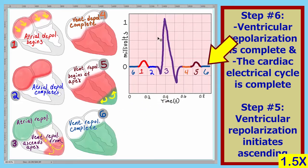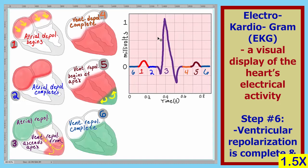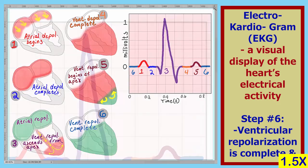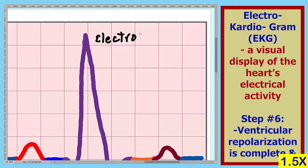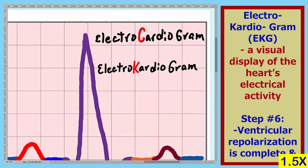Shown on the graph is one complete cycle of the heart's electrical activity. This is an electrocardiogram. The first electrocardiograph instrument was invented by the Germans, and so the word is spelled with a K instead of a C, and this one is abbreviated EKG. And the first one, of course, is abbreviated ECG.